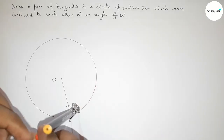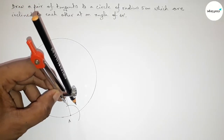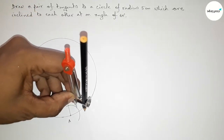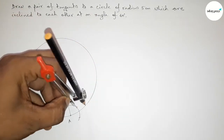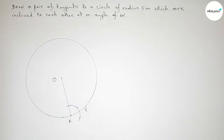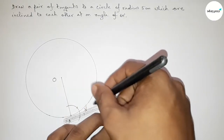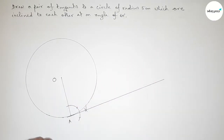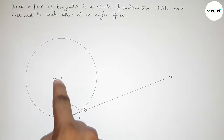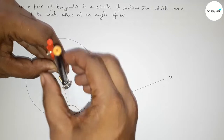Drawing an arc, then putting the compass with the same length and cutting here, then cutting here again. Both curves intersect at a point. Joining this line — we can say that this is a tangent. Taking point X, so AX is a tangent.